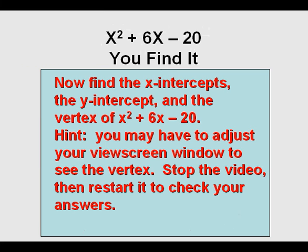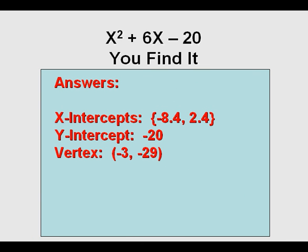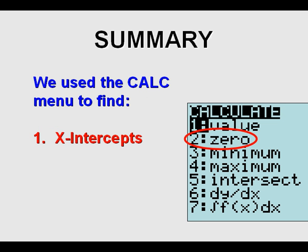Now try this one yourself: y equals x squared plus 6x minus 20. You may need to adjust your window to see the vertex. Stop the video, find the answers, then restart to check. The answers are: x-intercepts negative 8.4 and 2.4, y-intercept of negative 20, and vertex at negative 3 comma negative 29.